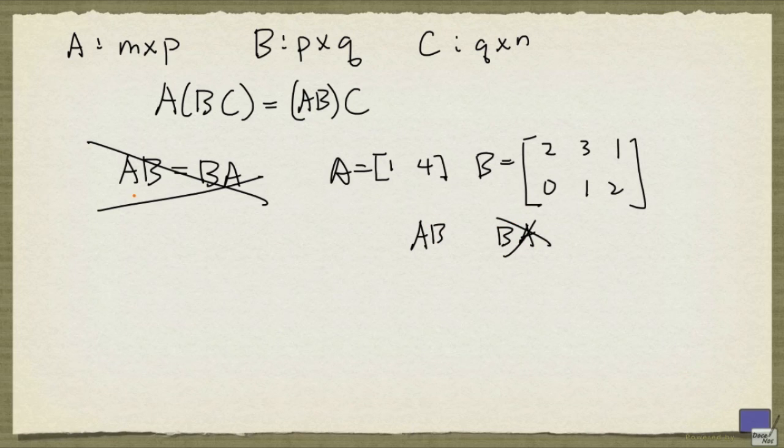And therefore matrix multiplication is not commutative. That's one thing that is very different from numbers.